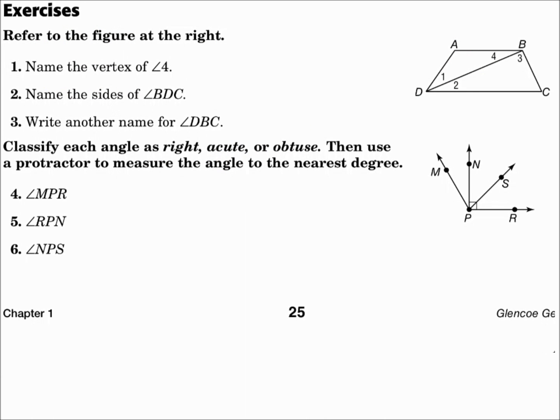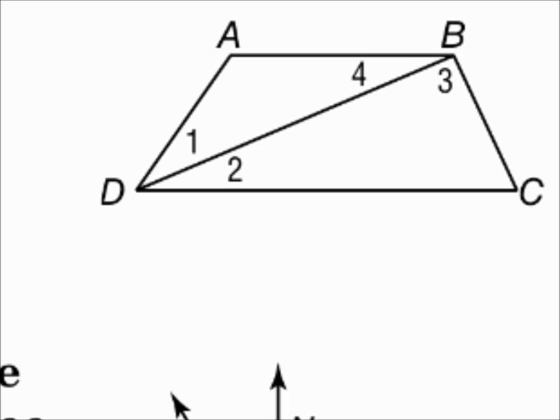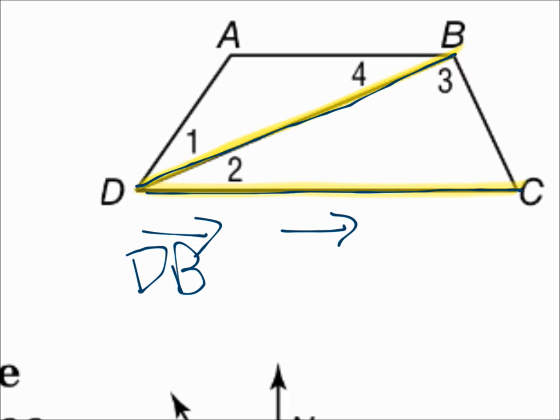Number two. Name the sides of angle BDC. Angle BDC has sides that are ray DB and ray DC. Remember to put the vertex for the first point in a ray.